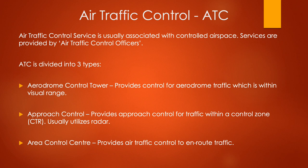The last type is the area control centre, very similar to approach control, but they provide air traffic control to en-route traffic outside of the air traffic zone — away from the airfield. They coordinate traffic routing nearby, giving airfield information, QNH settings, pressure settings, or anything useful for traffic transiting nearby.